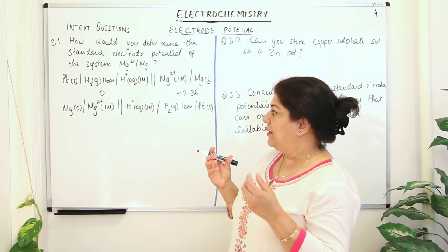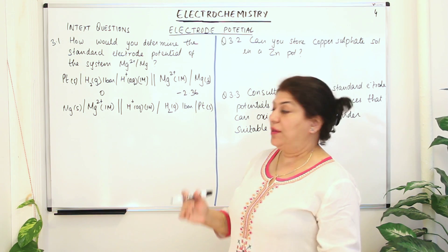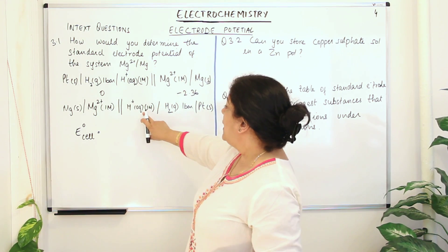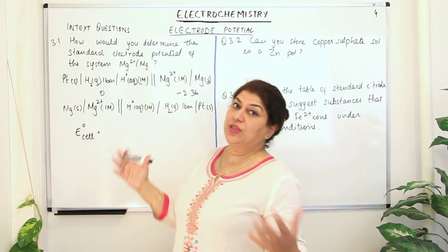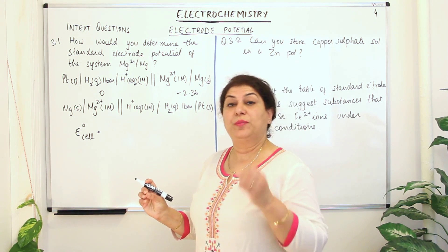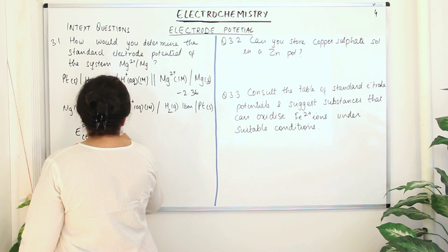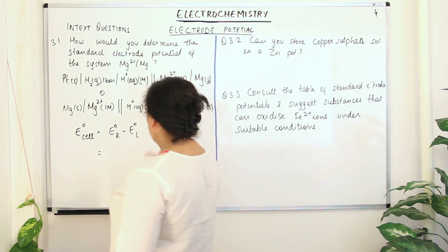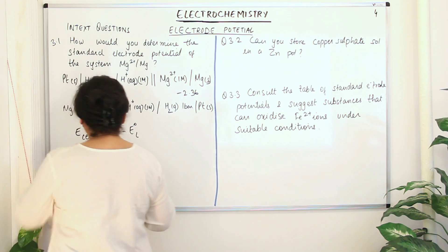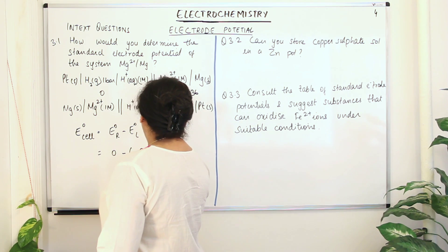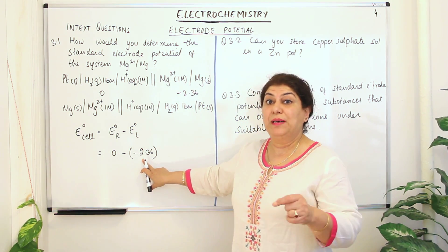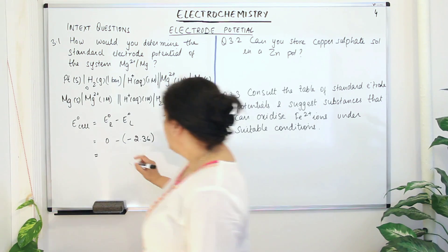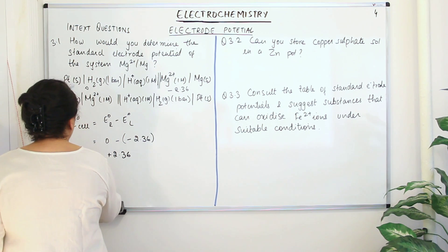Let us see how we calculate the EMF of the cell. The E°cell — we're finding the standard electrode potential because hydrogen is under standard conditions and magnesium is in a molar solution, so this is also under standard conditions. E°cell = E°right − E°left. E°right is the hydrogen electrode, which is zero. E°left is the magnesium electrode, so this would be zero minus (−2.36), which comes out to be +2.36 V — that is the EMF of the cell.